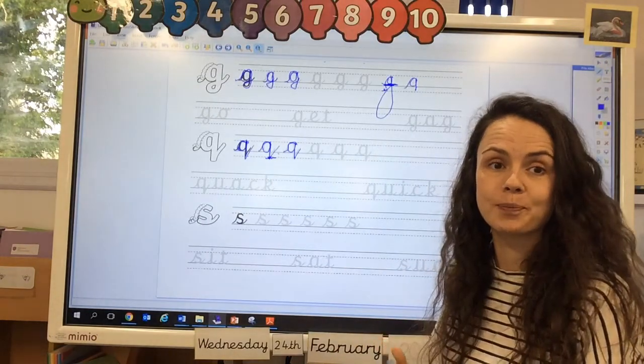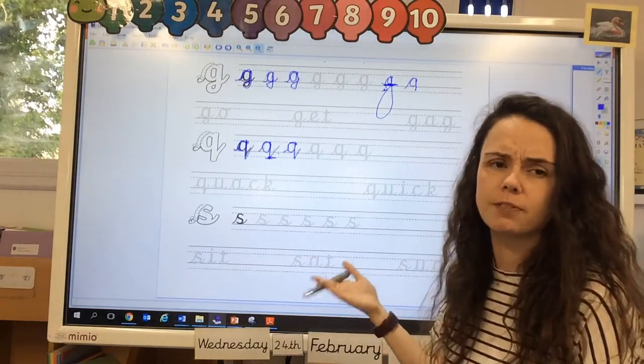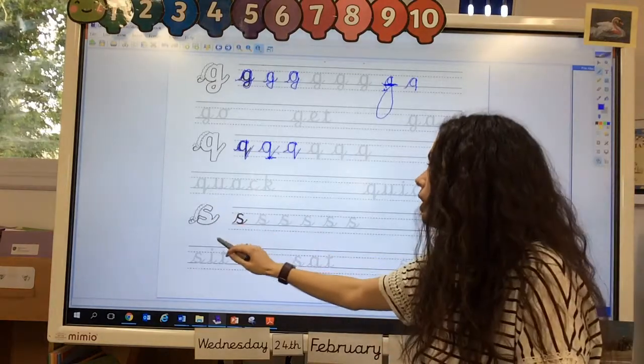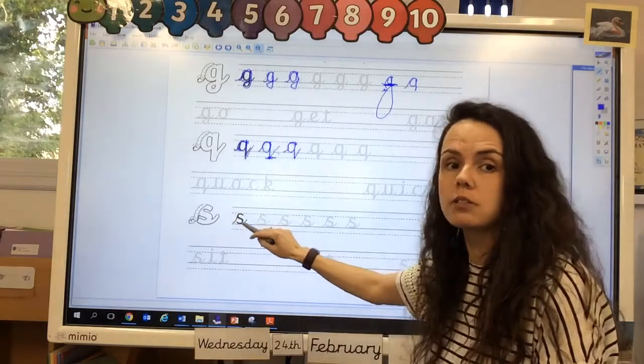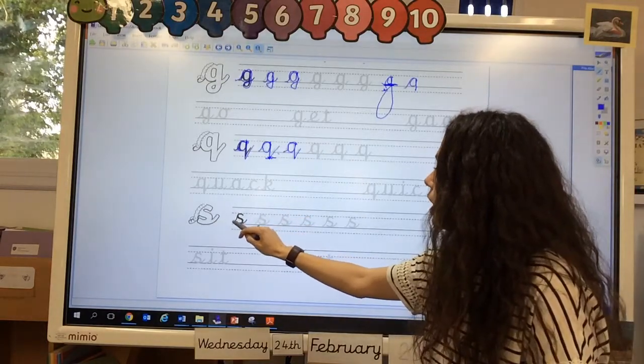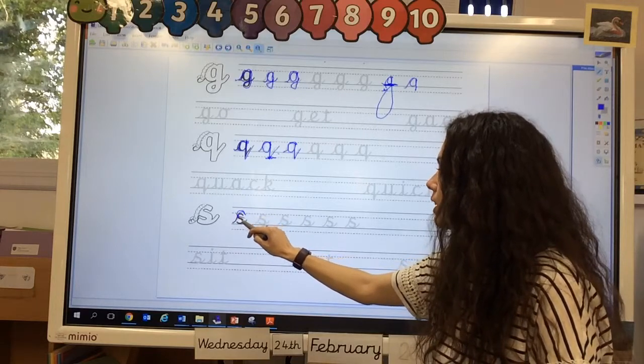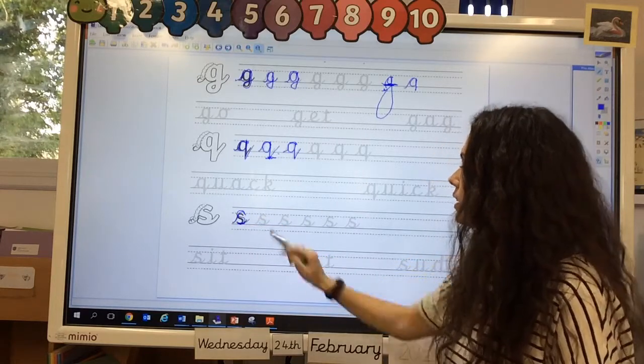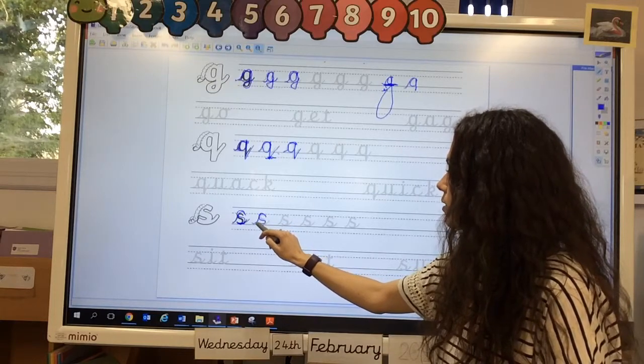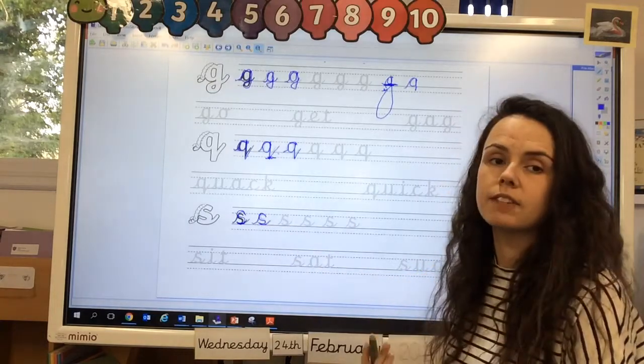Did you have a go at doing that? So, okay, can you remember the rhyme for S? It's really easy. It's, so you go up, and then around the snake. And a flick off the end, okay? So, up and slither around the snake. Up and slither around the snake. Fantastic.